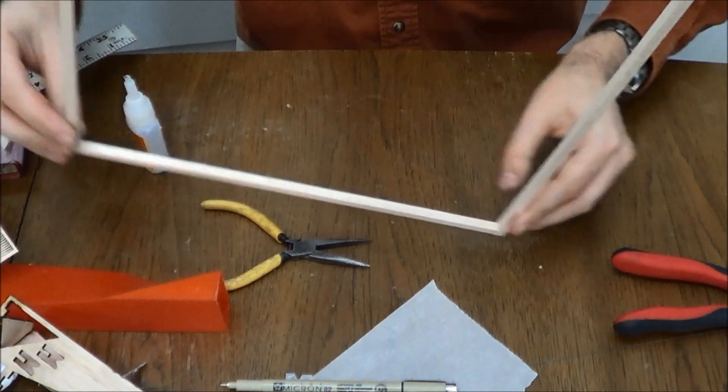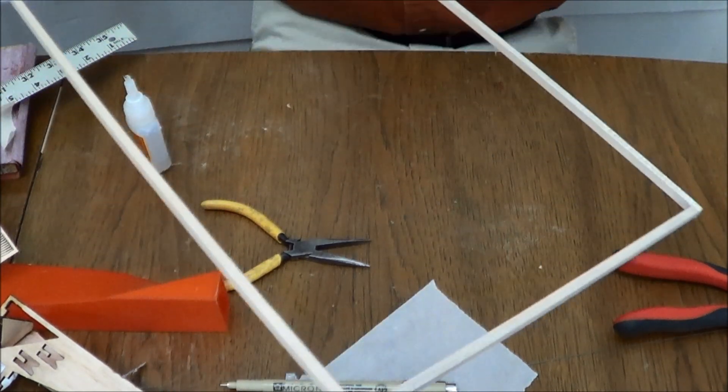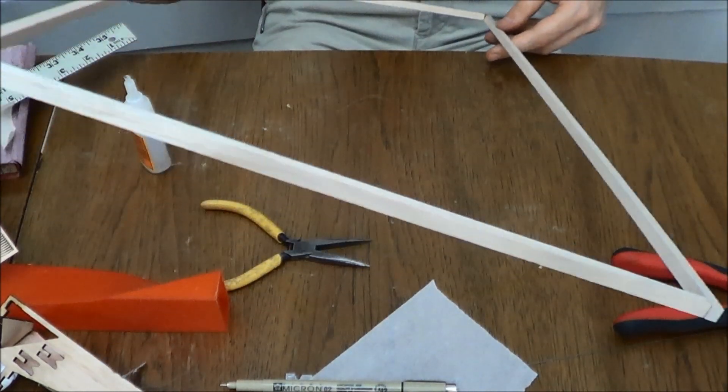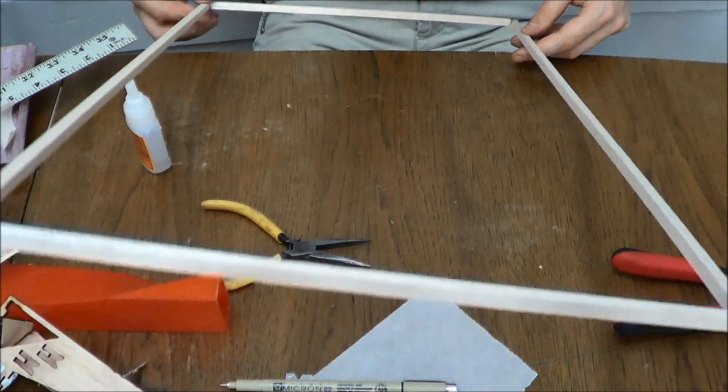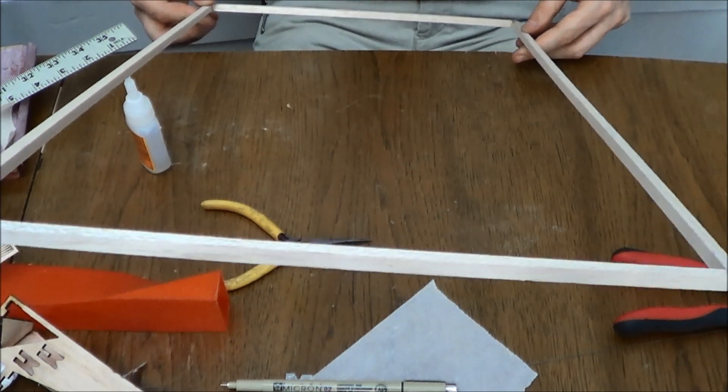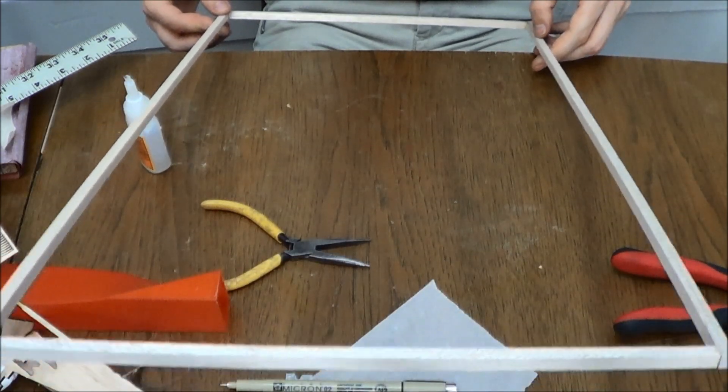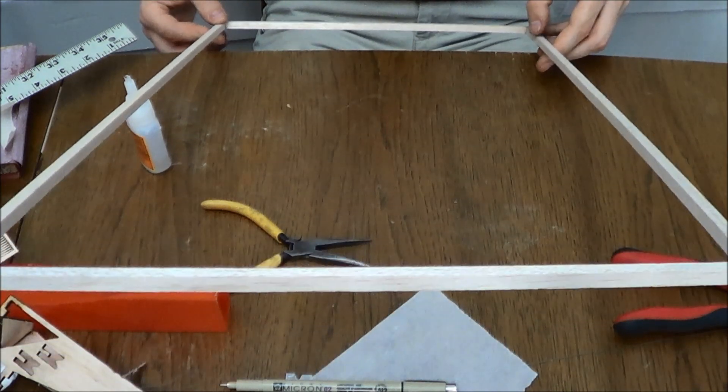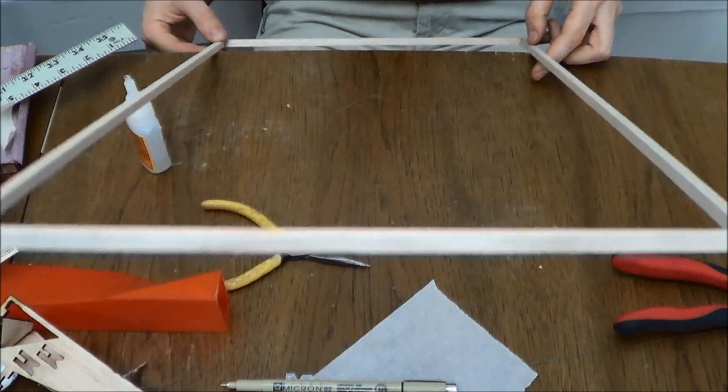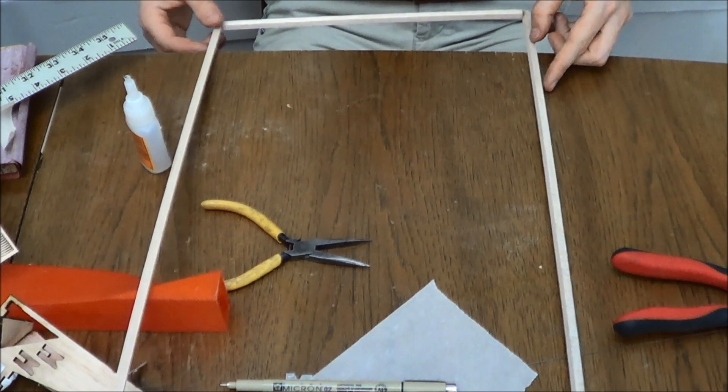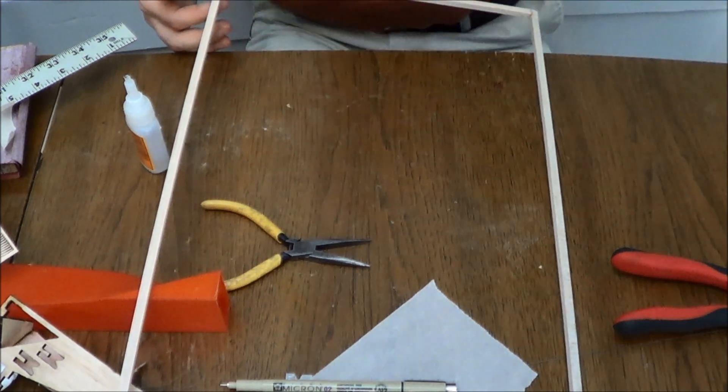At that point you have the frame. It's kind of going floppy here but bottom line is that's done and next we'll need to measure out our covering so we can cover this airplane.